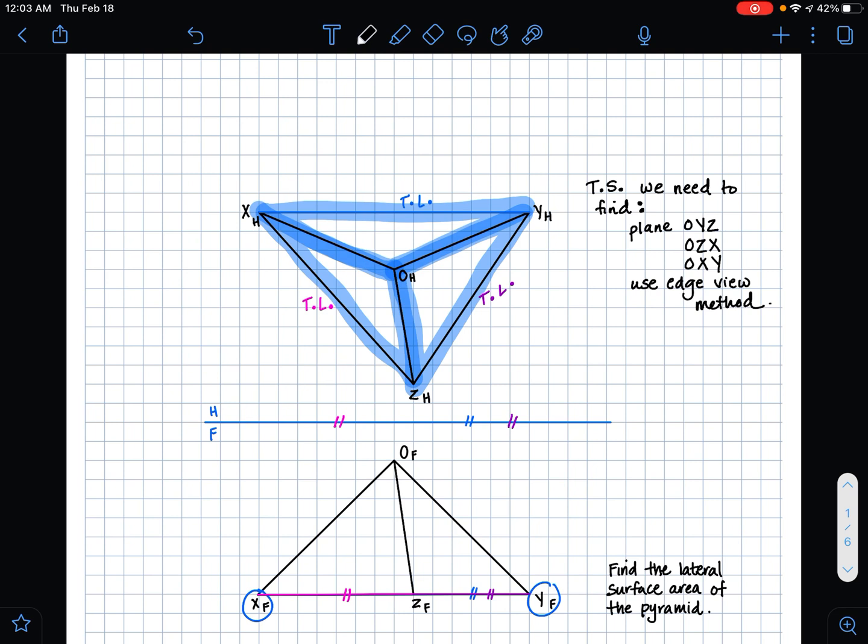Is the area of the shape minus the base. So we won't include the base of the triangular pyramid in our lateral surface area calculation. So we'll just be adding the true shapes of these planes.